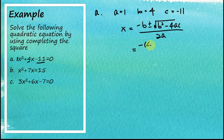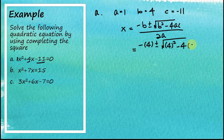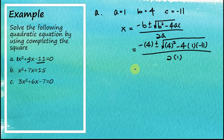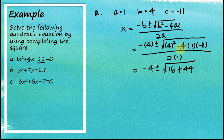Our b is 4, so we get negative 4, plus or minus the square root of b squared — b is 4, so 4² — minus 4 times a times c. When plugging values into the formula, it's preferable to use brackets. Our a equals 1 and our c equals negative 11, all divided by 2a where a equals 1. So this gives us negative 4 plus or minus the square root of 16 minus 4 × 1 × (−11). Negative times negative gives positive, so this becomes positive 44, giving us 16 + 44, over 2.